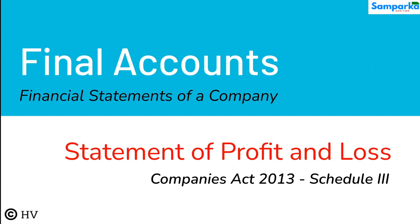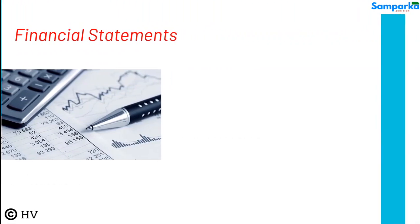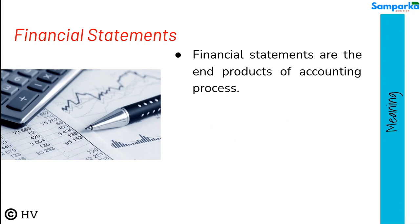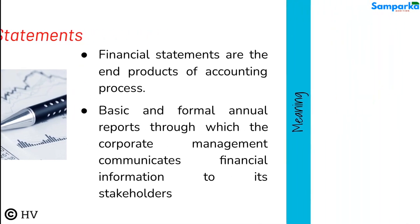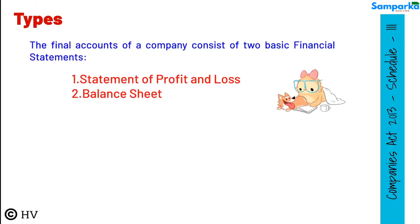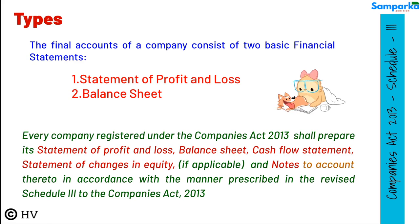Let's discuss the topic on financial statements of a company — Statement of Profit and Loss. Financial statements are the end products of the accounting process, basic and formal annual reports through which corporate management communicates financial information to its stakeholders. The final accounts of a company consist of two basic financial statements: Statement of Profit and Loss, and Balance Sheet. Every company registered under the Companies Act 2013 shall prepare its Statement of Profit and Loss, Balance Sheet, Cash Flow Statement, Statement of Changes in Equity (if applicable), and Notes to Accounts, in accordance with the manner prescribed in the revised Schedule 3 to the Companies Act 2013.